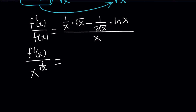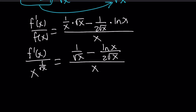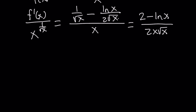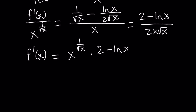Let's simplify. 1 over x times square root of x can be written as 1 over square root of x, which is helpful because we're going to make a common denominator next. Making a common denominator of 2 times square root of x, we get 2 minus ln x in the numerator — the denominators multiply because you flip and multiply — giving 2x times square root of x. But that's f prime divided by f, so we multiply both sides by f, which is x to the power 1 over square root of x, to get f prime by itself.